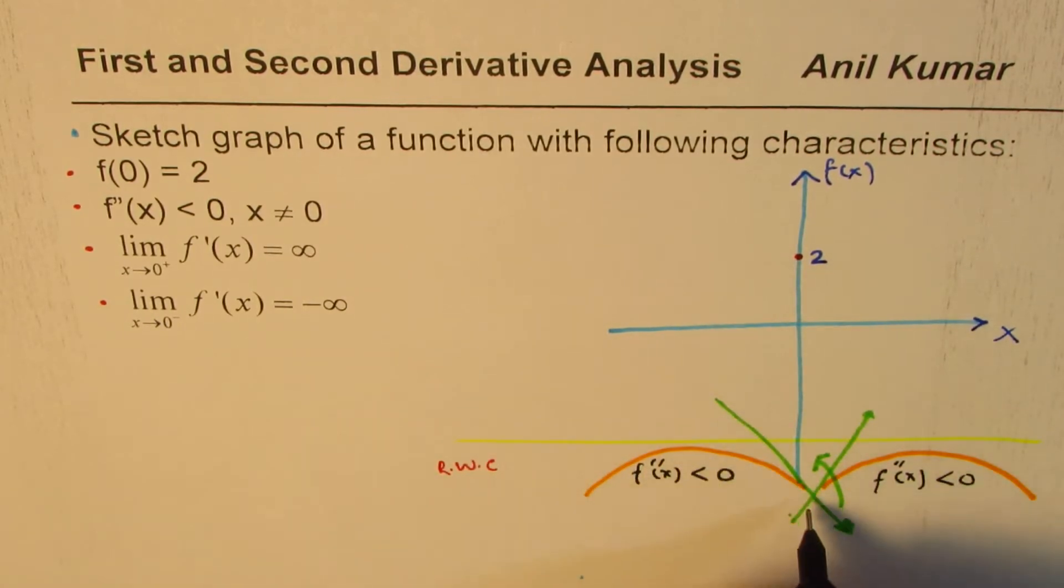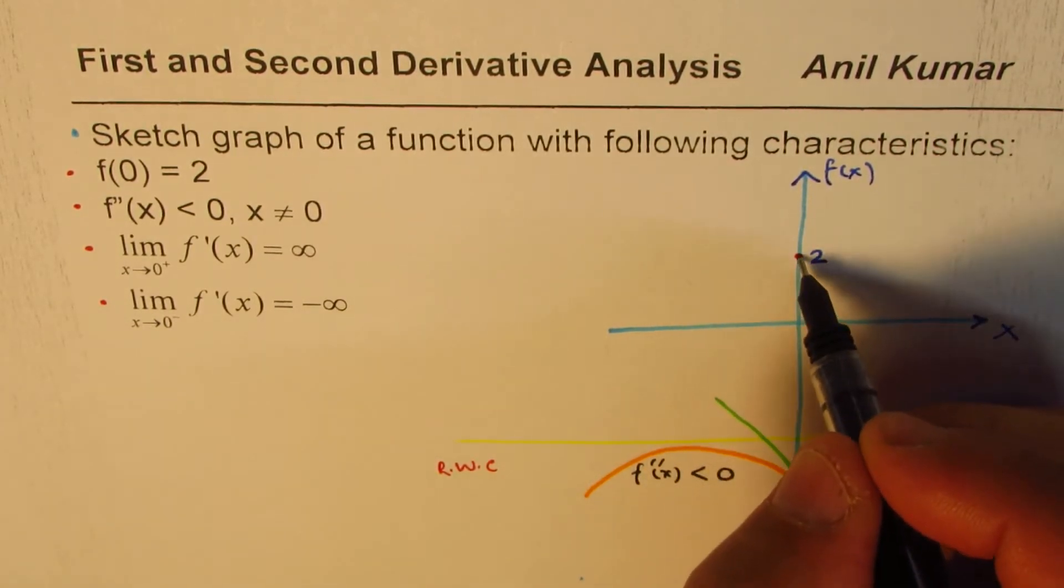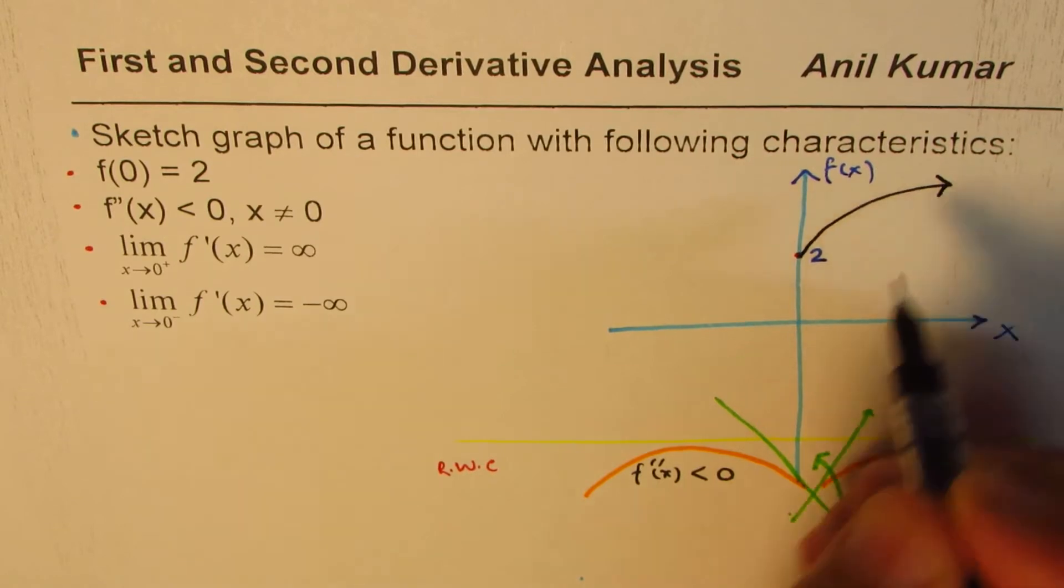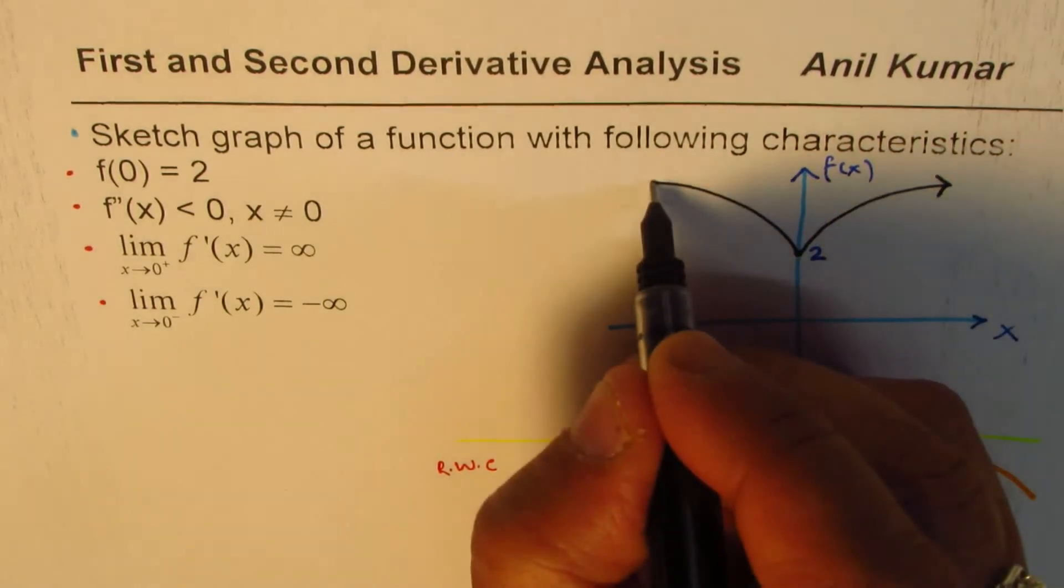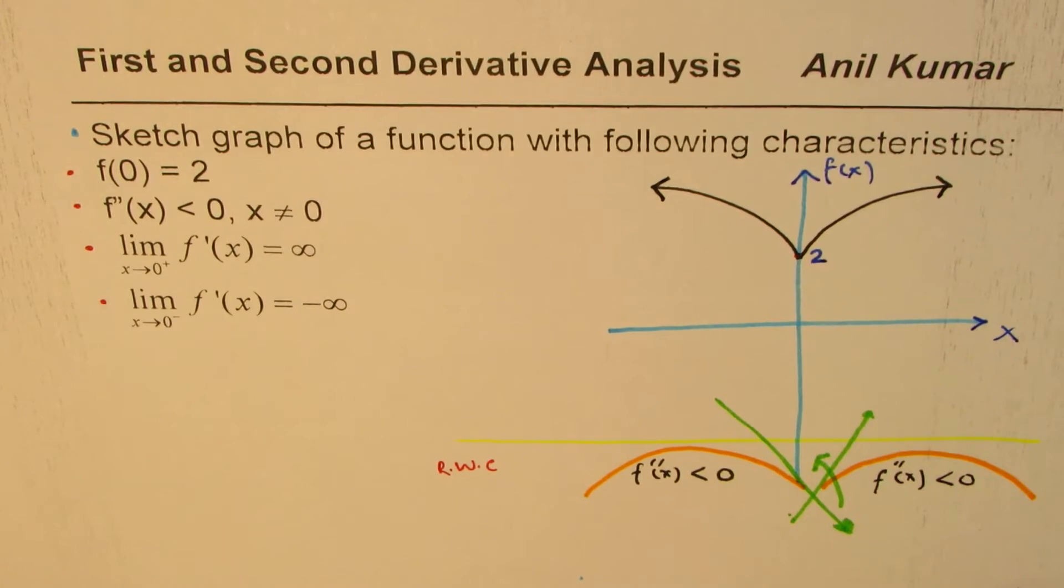We have a cusp here at 2. So we can make a cusp here at 2 and then sketch the graph. And that becomes the graph of the function.